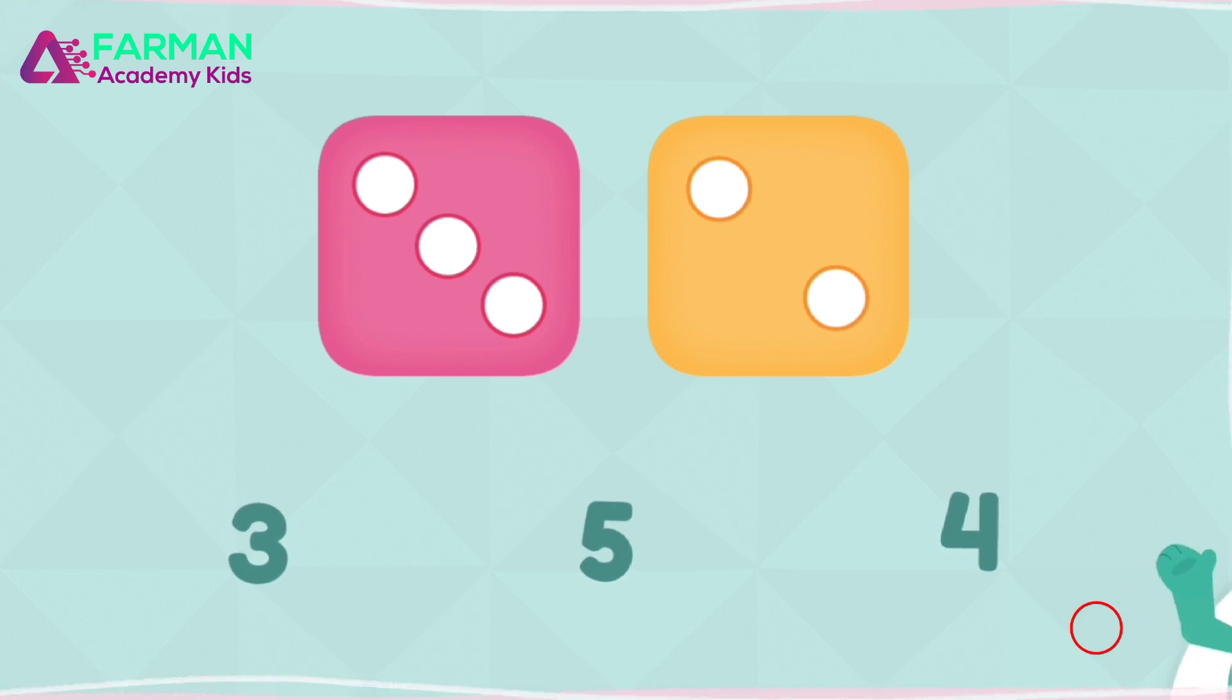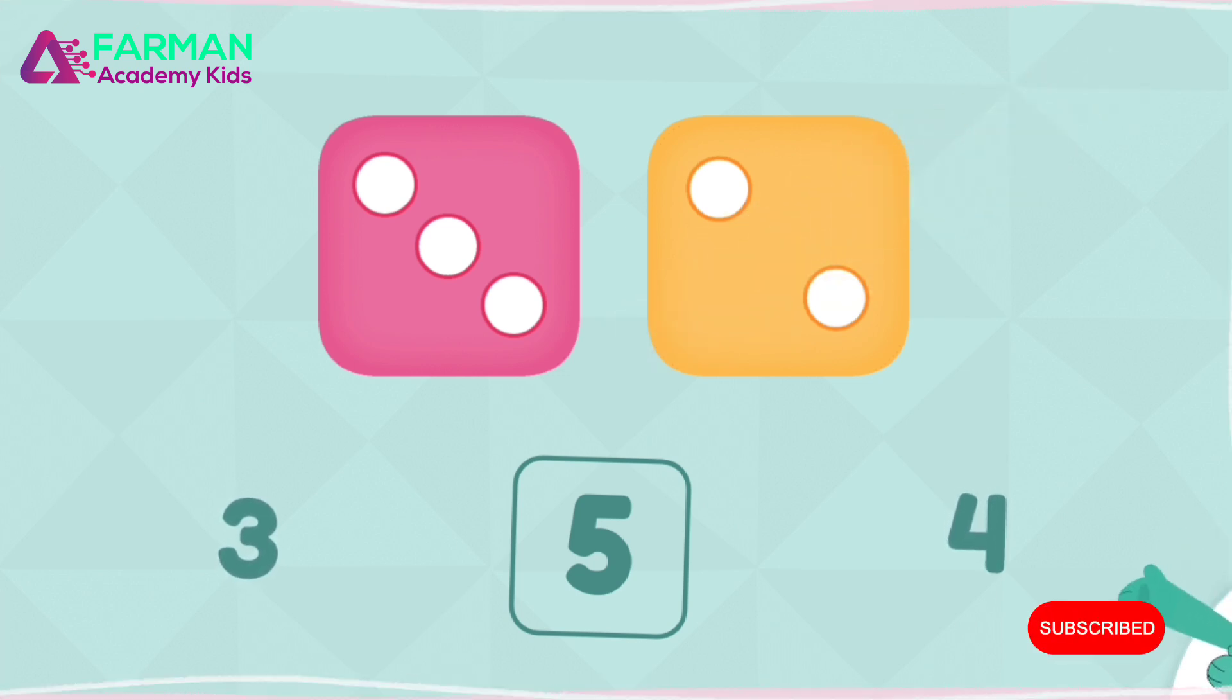How many dots are on both dice all together? Five. You're doing it! There are five dots on both dice all together.